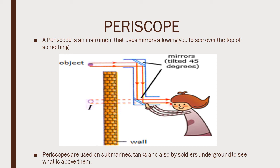Periscopes are used on submarines, tanks, and also by soldiers underground to see what is above them without them having to go outside and get themselves injured in times of battle.